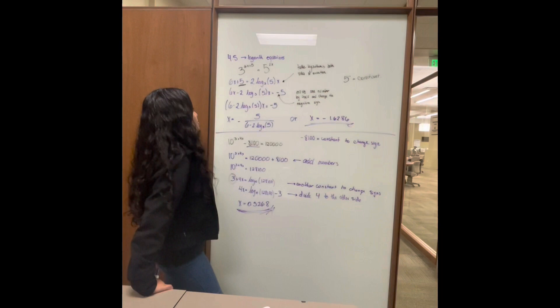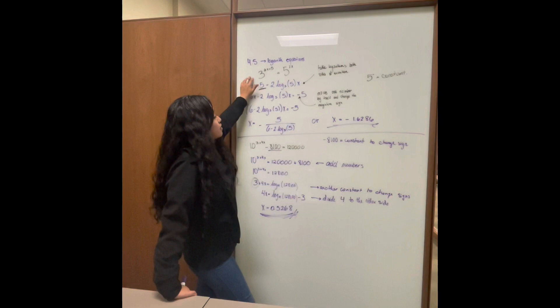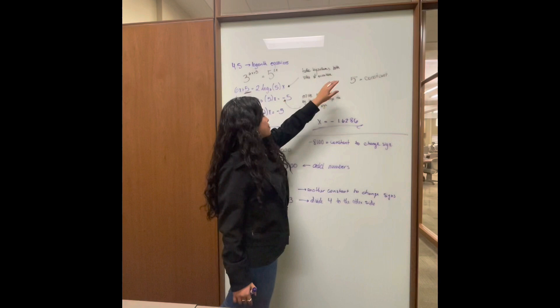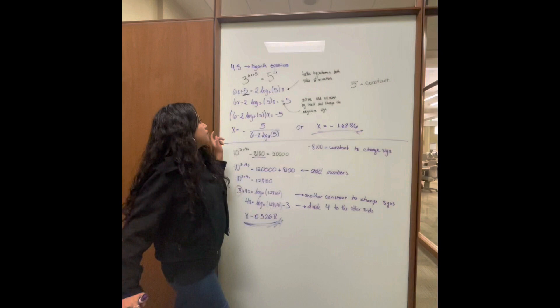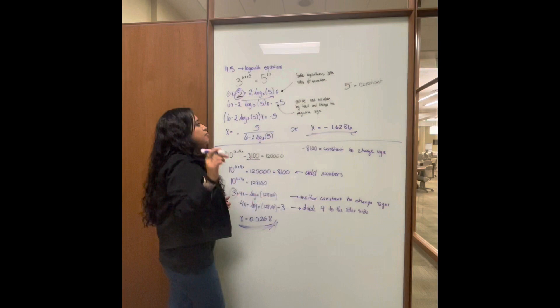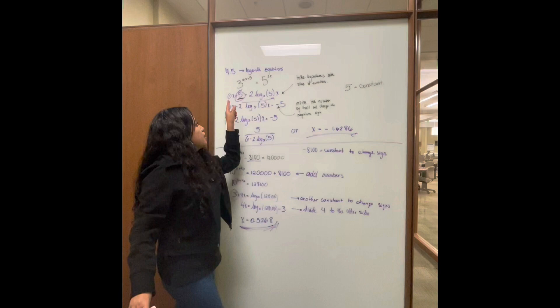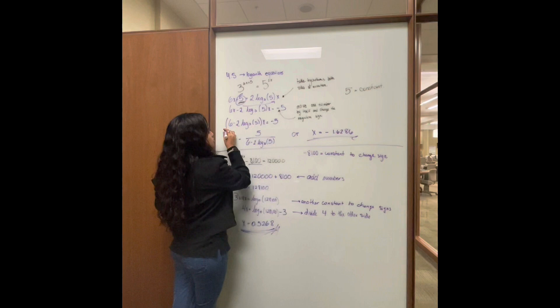So we can see this is our first equation. As it says, we take logarithms from both sides of the equation — this side and this side. Then we're going to move this one to the other side, because what we need is just one number alone, and we need the setting to be changed. So this one goes in here, and this is going to be our new equation.